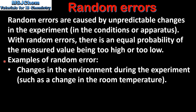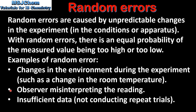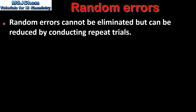Examples of random error are changes in the environment during the experiment, such as a change in the room temperature, the observer misinterpreting the reading, and insufficient data — that's not conducting repeat trials. Random errors cannot be eliminated but can be reduced by conducting repeat trials.